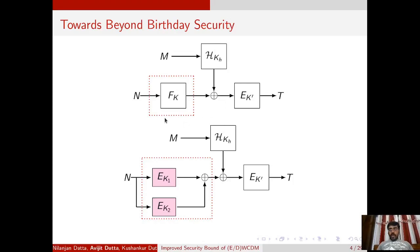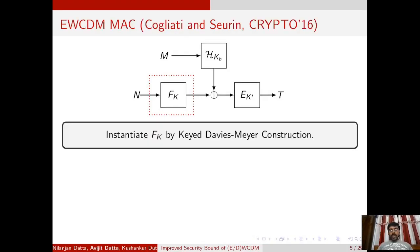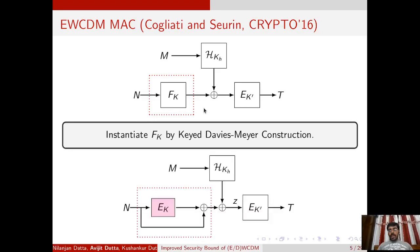As a possible remedy, one can think of instantiating this pseudorandom function with the popular sum of pseudorandom permutations. The sum of pseudorandom permutations is a very good PRF — in particular, it gives the optimal security bound. So if you replace fk with the sum of PRP construction, the resulting construction gives optimal security, but this requires three block cipher calls. Therefore, we ask: can we reduce the number of block cipher calls? To answer this, in Crypto 2016, Cogliati and Seurin proposed their construction known as Encrypted Wegman-Carter with Davis-Mayer, in which the pseudorandom function of EWC-MAC is instantiated by the keyed Davis-Mayer construction.